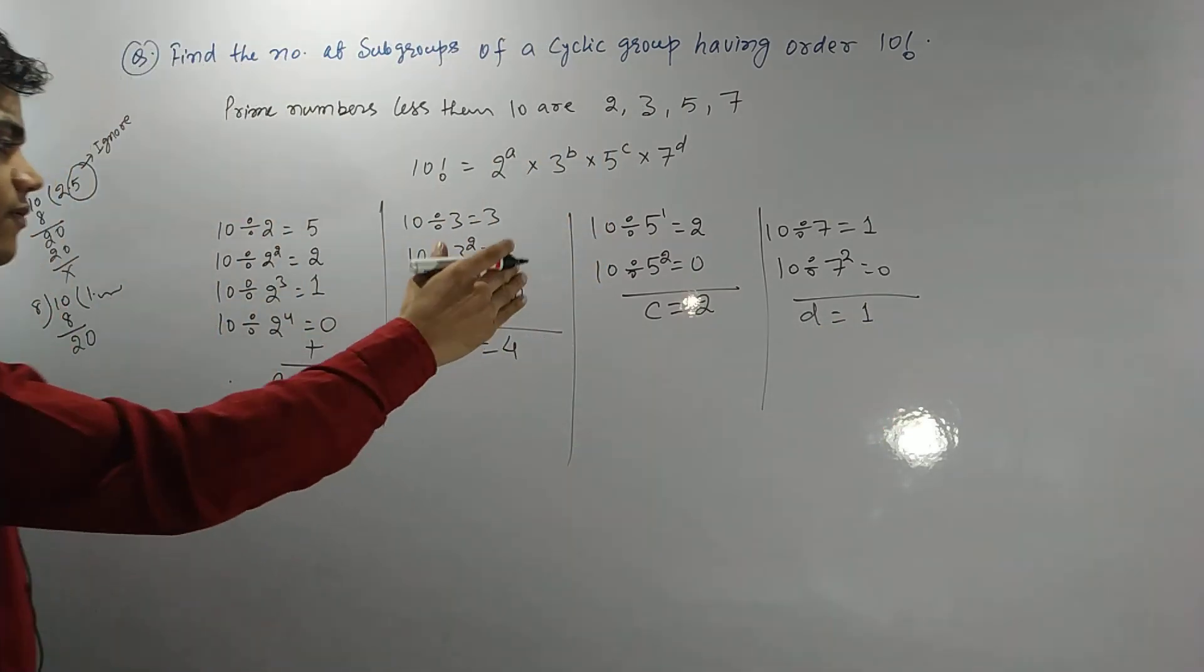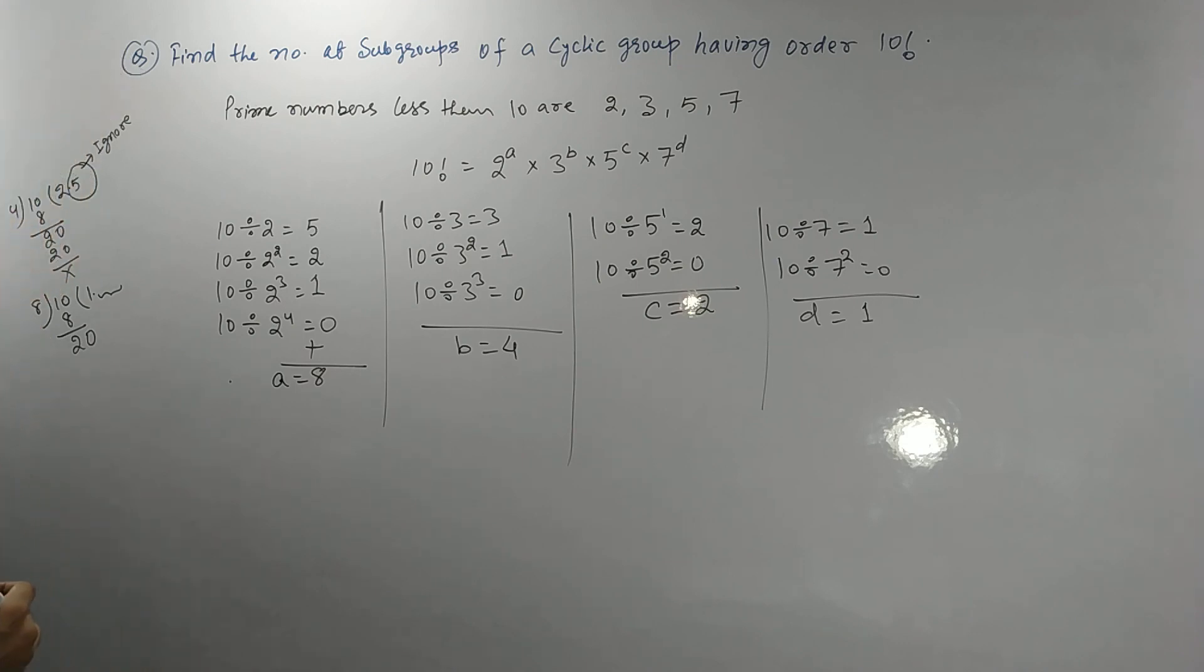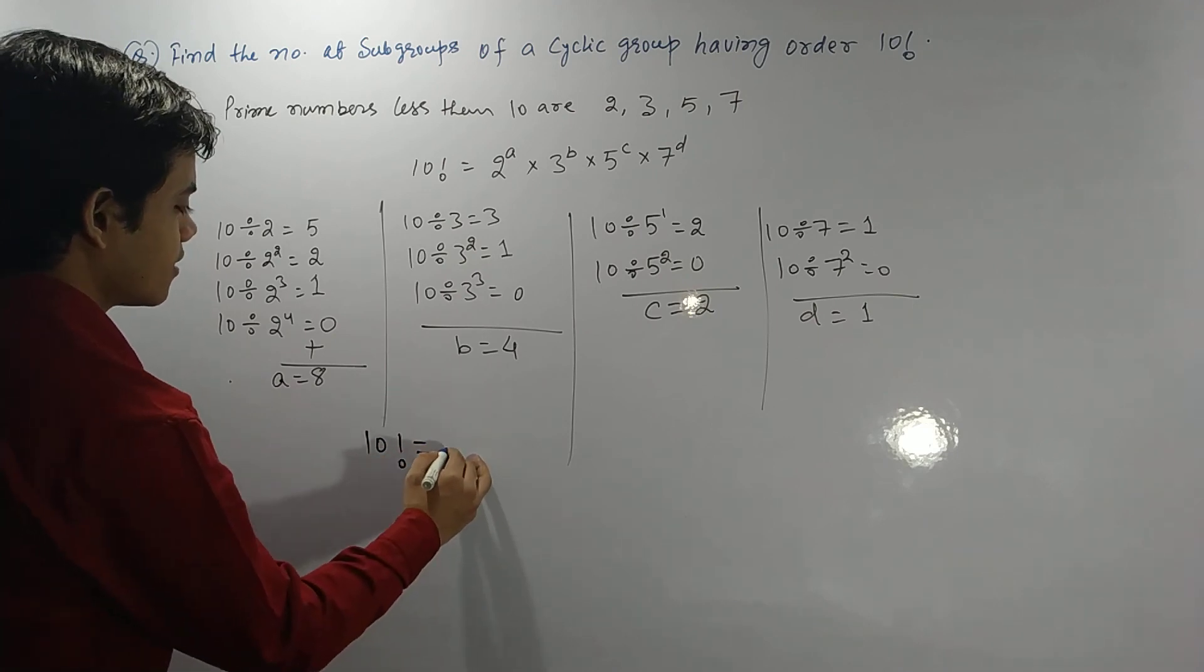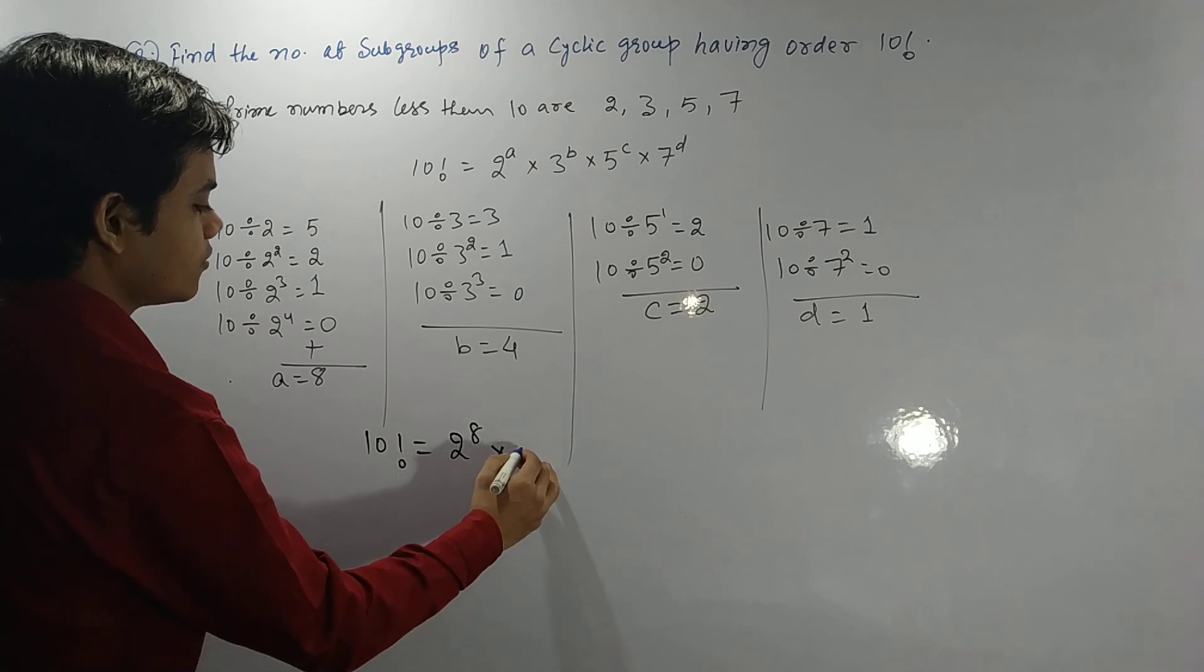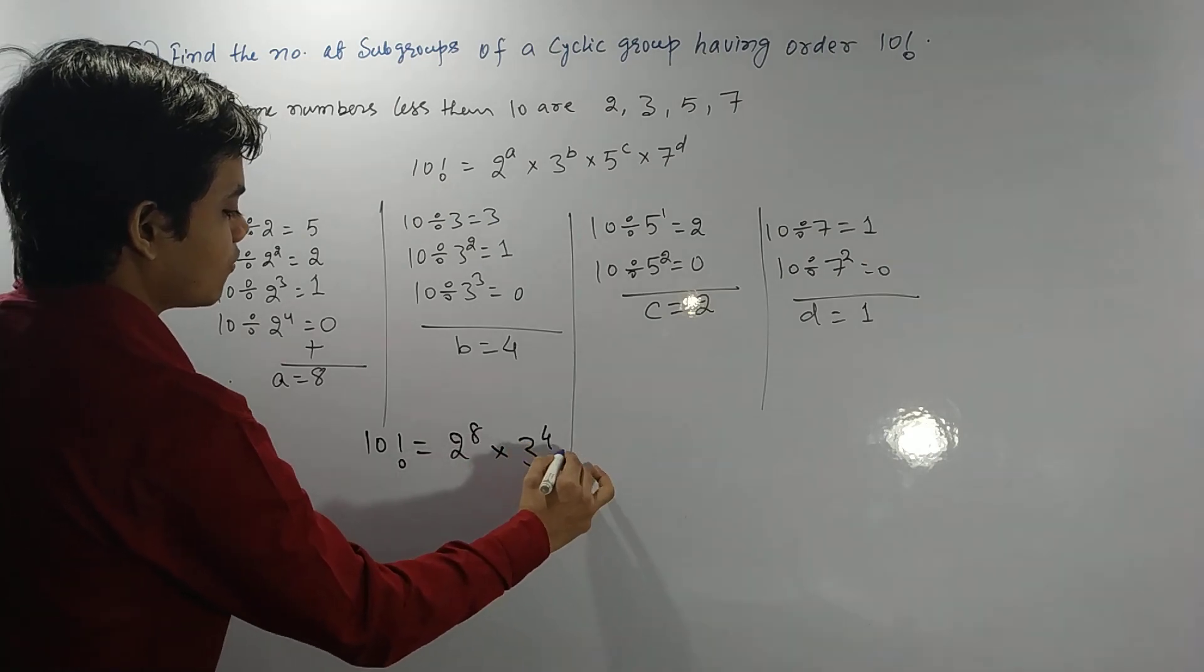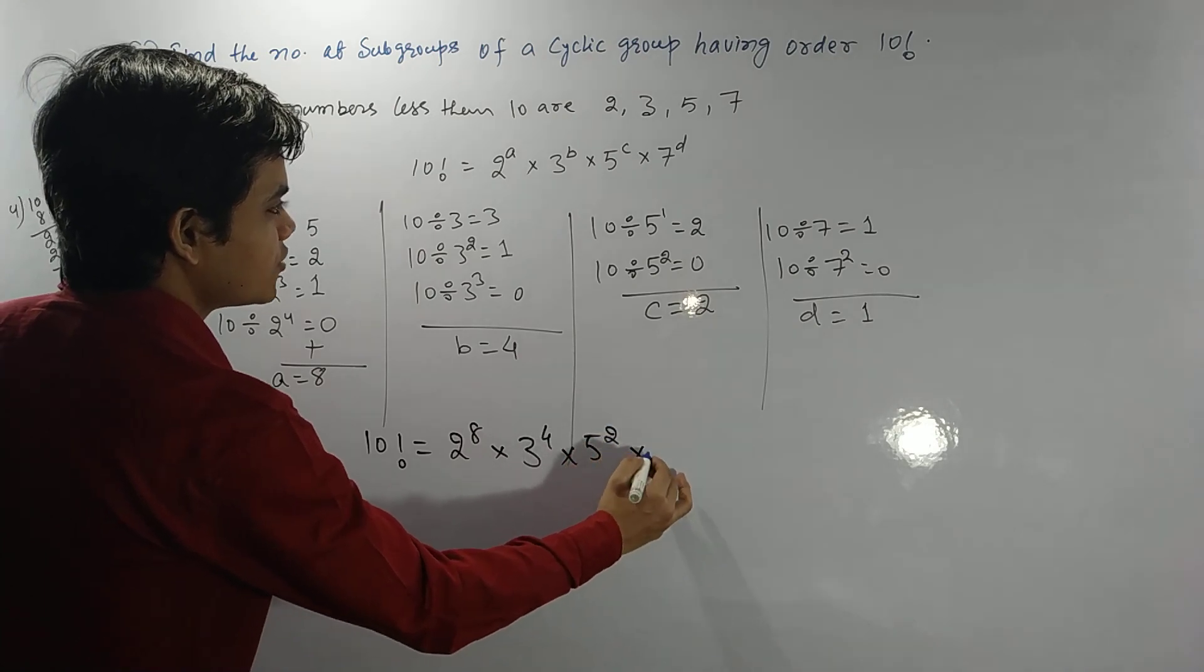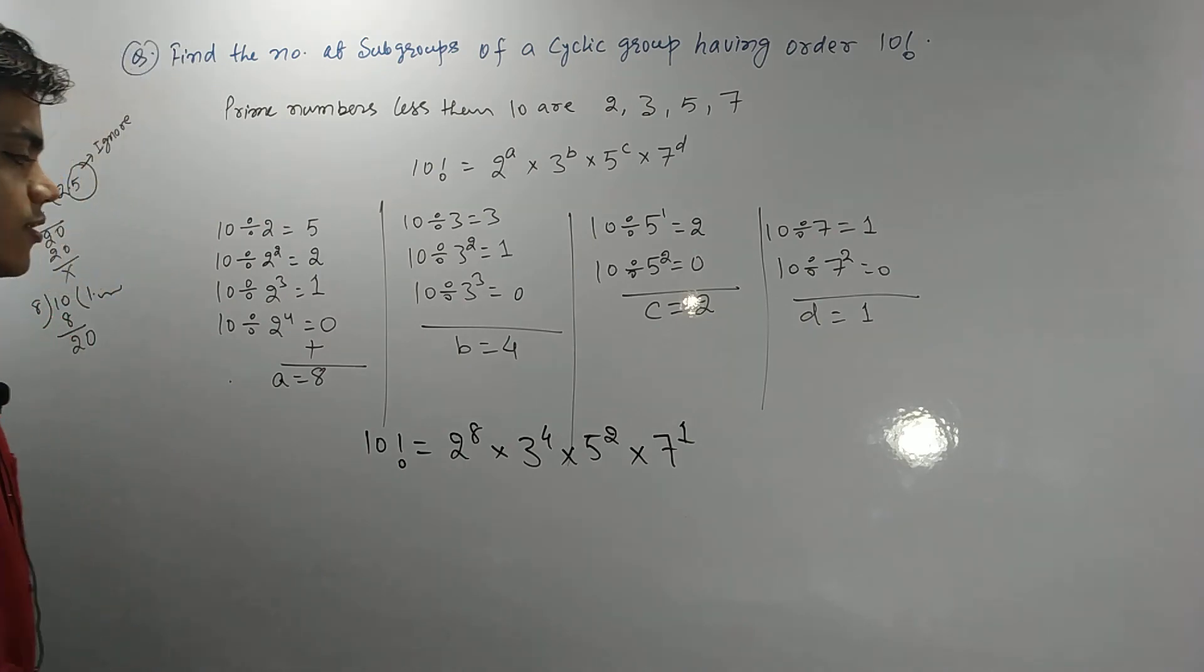So now from here, 10 factorial can be written as 2 to the power 8 into 3 to the power 4 into 5 to the power 2 into 7 to the power 1. Is this clear?